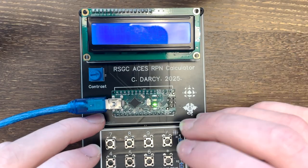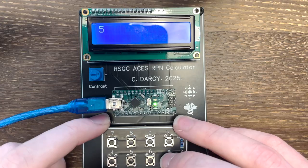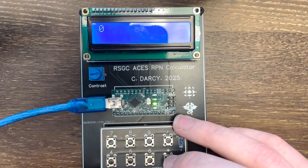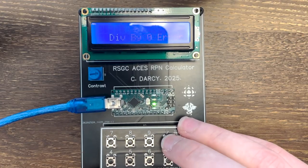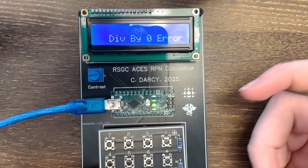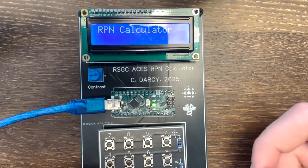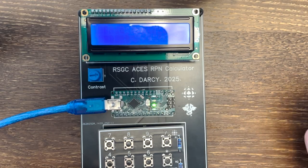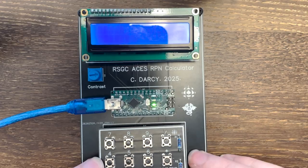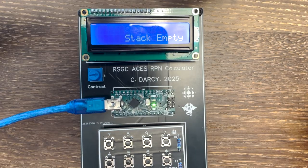If I try to, let's say, divide by 0, so 5, 0, and divide, I'm going to get a divide by 0 error. And there are other errors programmed into this as well, such as an empty stack error if there's not enough input for the operation. So if I try and just do an operation, stack empty.